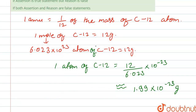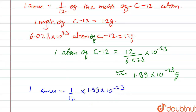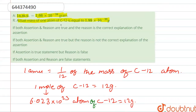Next we calculate 1 amu. We see that 1 amu is equal to 1/12 of the mass of a carbon-12 atom. So 1 amu = (1/12) × 1.99 × 10⁻²³, which equals 1.66 × 10⁻²⁴ gram. So this is correct.